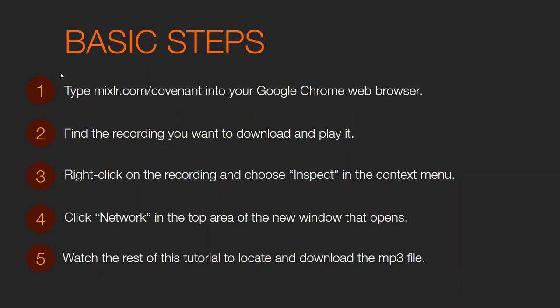Then find the recording you want to download and play it. Right-click on that recording and choose Inspect in the context menu. Then click Network. You will see all of this — but this is just a summary for you to see what it looks like when you click Network.